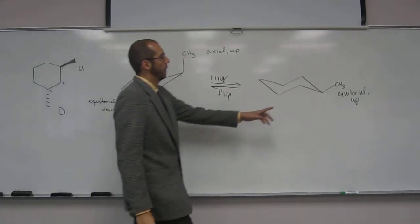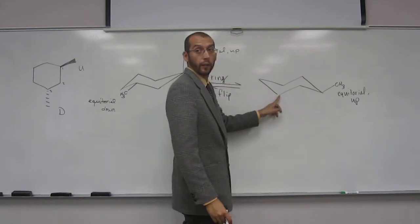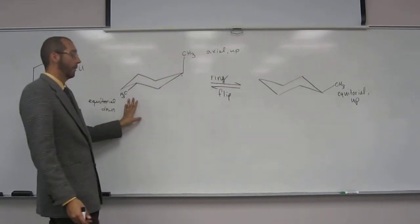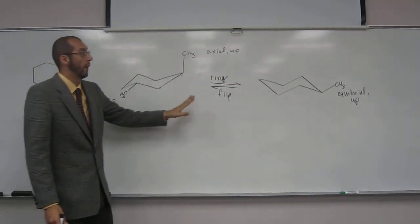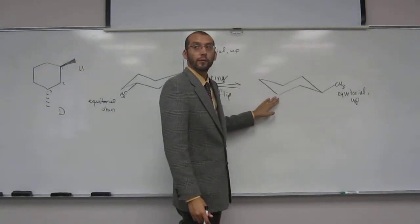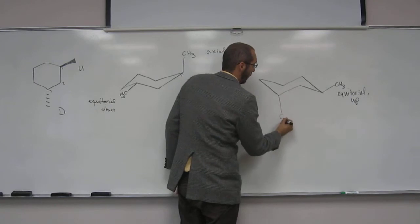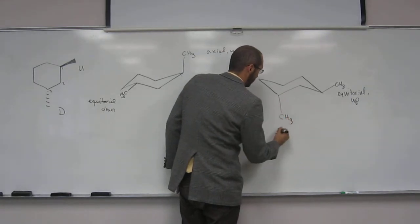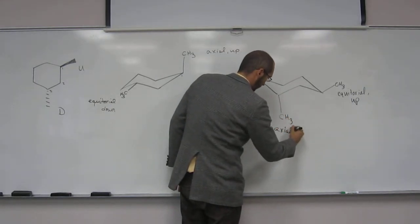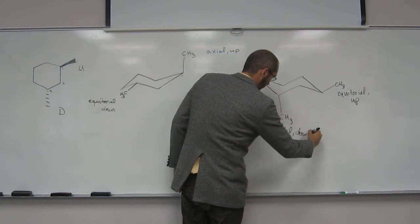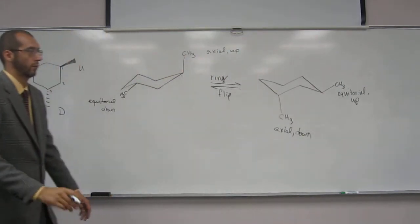And then three. So one, two, three. Right? Equatorial down here. So it's going to be what? Axial down here. Axial down here.